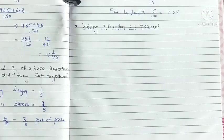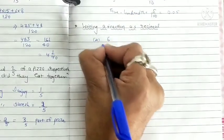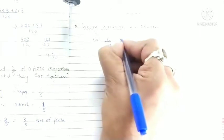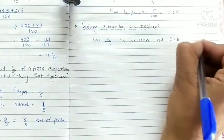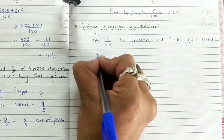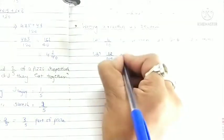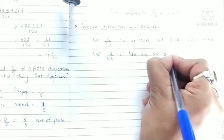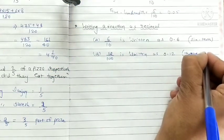Next topic, writing of fractions as decimals. First, six upon ten is written as 0.6. Twelve hundredth.